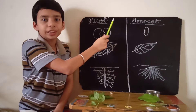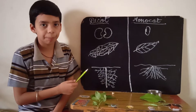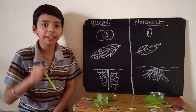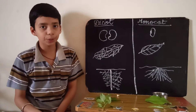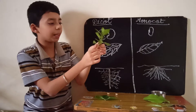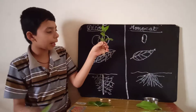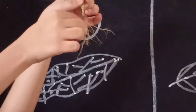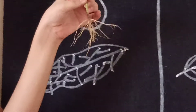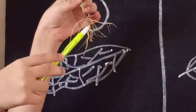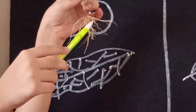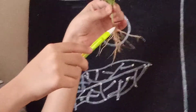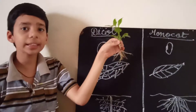Now I will show how a dicotyledon plant's roots will be. It has a tap root system. Tap root means it has a primary root, secondary roots, and tertiary roots. Tap roots penetrate deep into the soil. Here is a plant example — we can clearly see the tap root system. This is the primary root, from which secondary roots arise, and from those tertiary roots arise. These small tertiary roots arise from the secondary roots, which arise from the long main primary root.